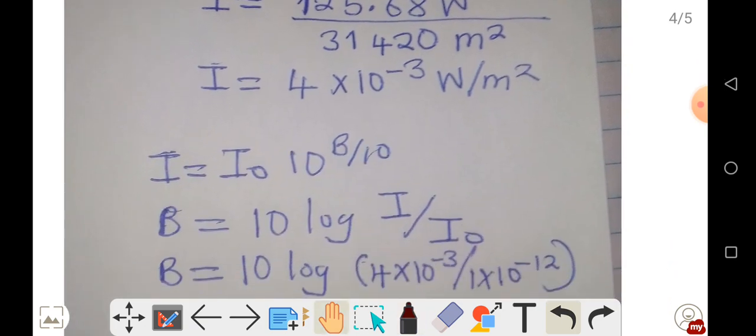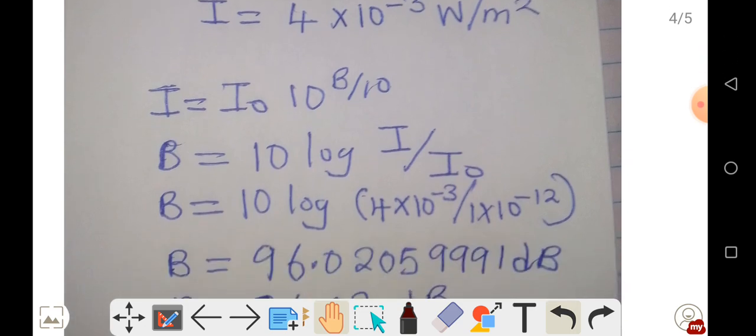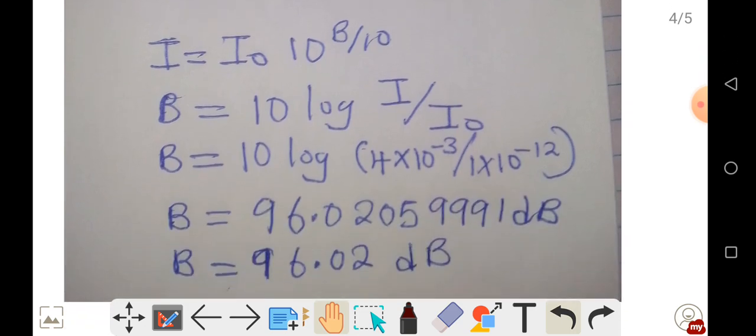Having found the intensity, we can now find the intensity level of sound. To find the intensity level, it is given by 10 log intensity over I₀.